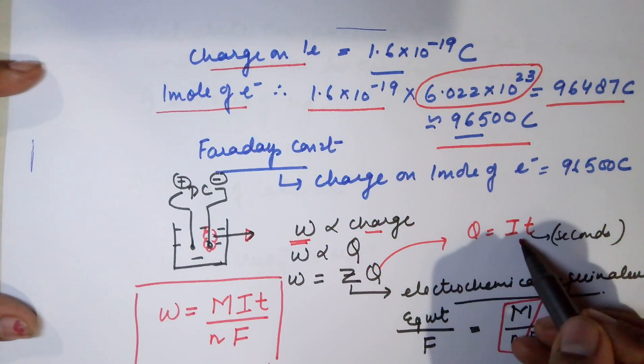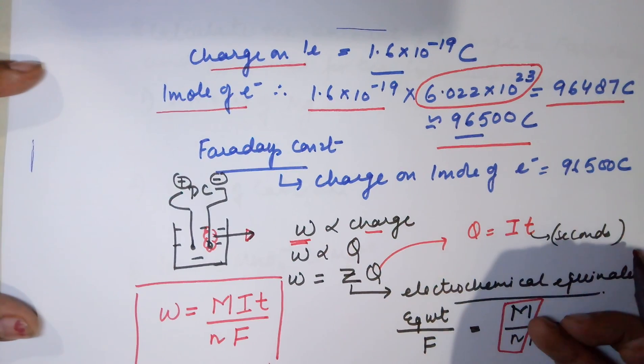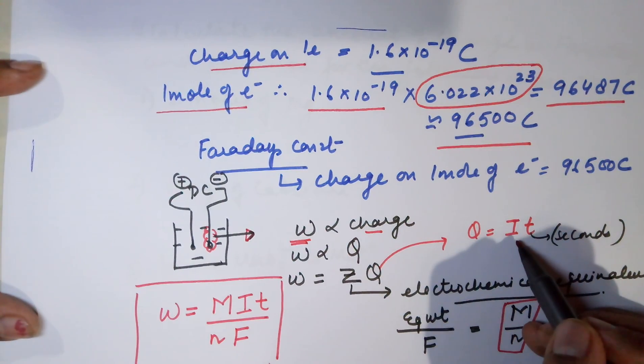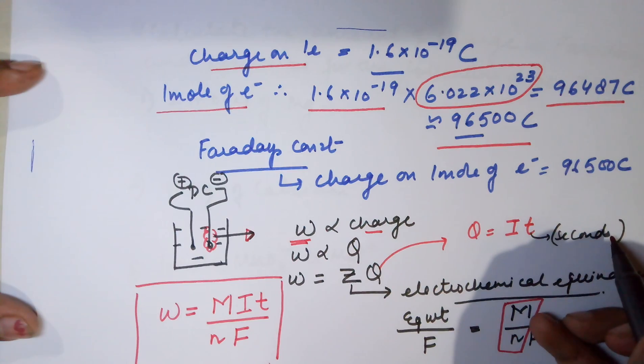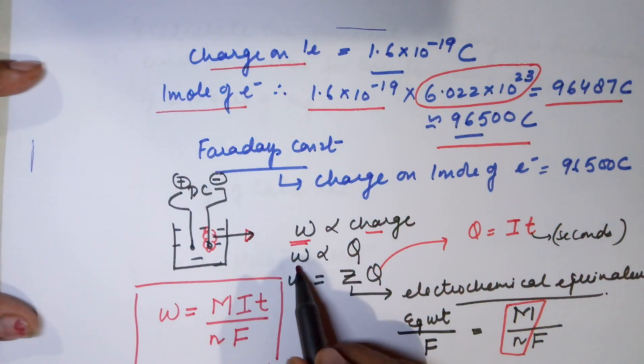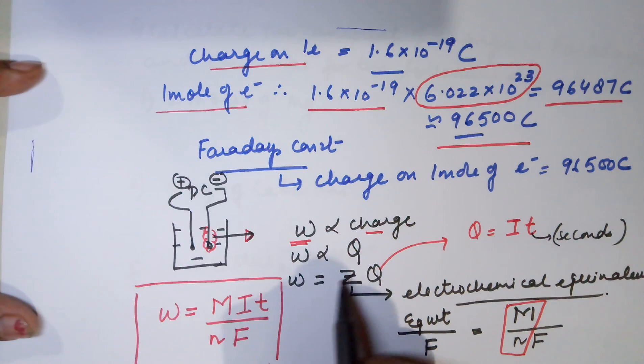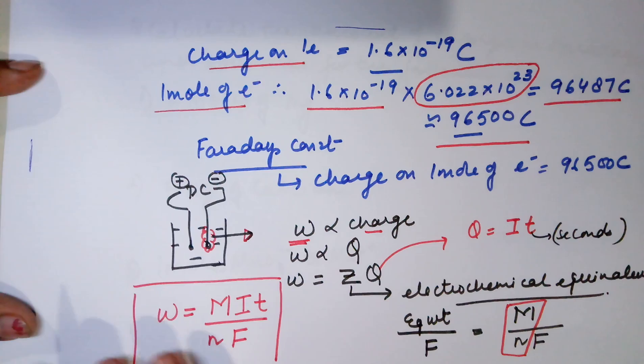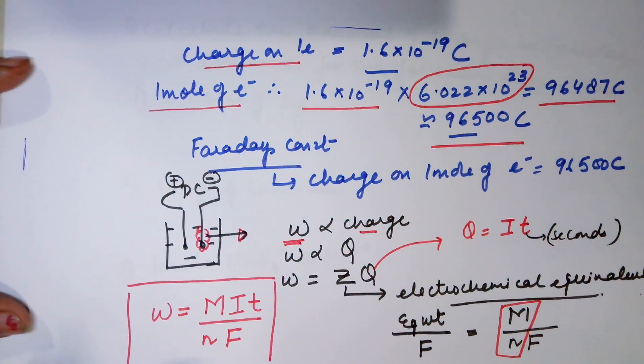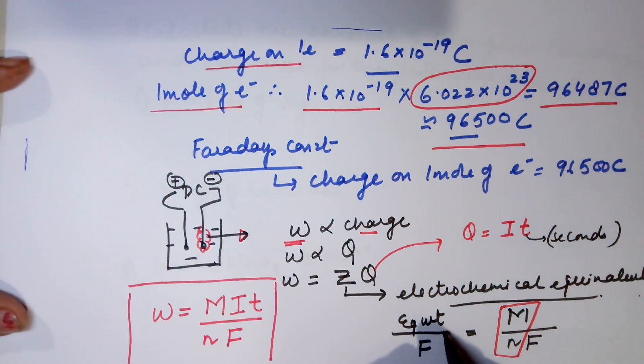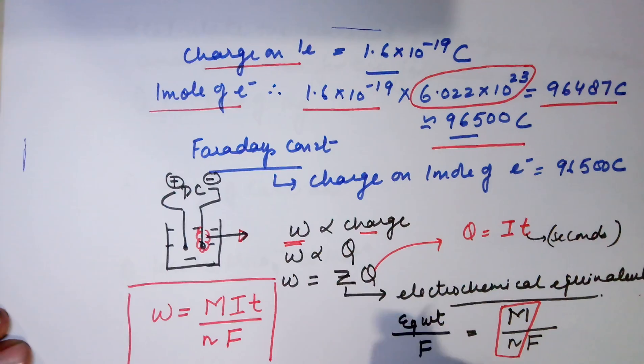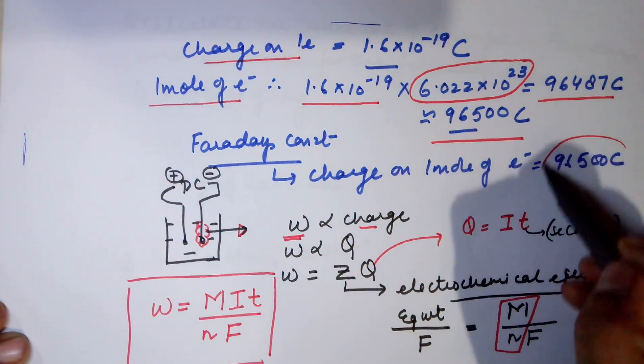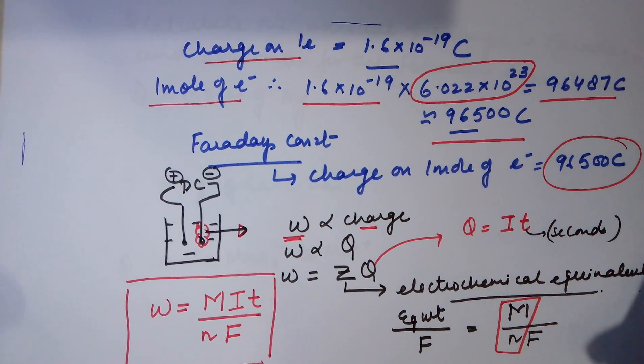The first law states that the weight deposited depends on the charge passed. The charge is represented as Q and the value of Q is current into time in seconds. So the weight deposited is proportional to Q and there is a proportionality constant given as Z which is the electrochemical equivalent.